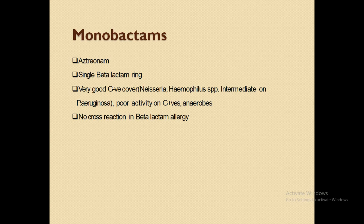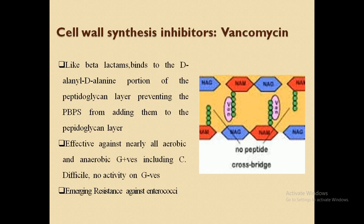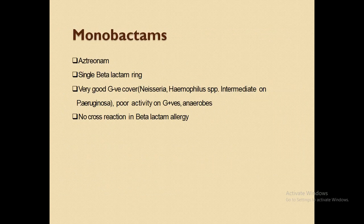Monobactams are another class of antibiotic, also called aztreonam. Aztreonam is the group member of the monobactams and comes under the category of beta-lactam antibiotics. Monobactams provide very good gram-negative coverage — for example, Neisseria gonorrhoeae, Haemophilus species, and Pseudomonas aeruginosa — but have poor activity against gram-positive organisms and anaerobes. There is no cross-reaction in beta-lactam allergy, so patients who are allergic to penicillin can use monobactams as an alternative.